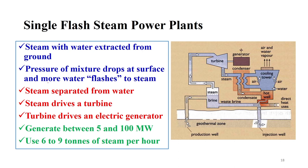A single flash steam power plant extracts steam with water from the ground. As pressure drops at the surface, more water flashes to steam. A separator separates brine and steam — steam expands in the turbine, generating electricity, then is condensed. Brine and condensate go together to the injection well. Some heat can also be used for district heating. A single flash plant generates between 5 to 100 megawatt and uses 6 to 9 tons of steam per hour.